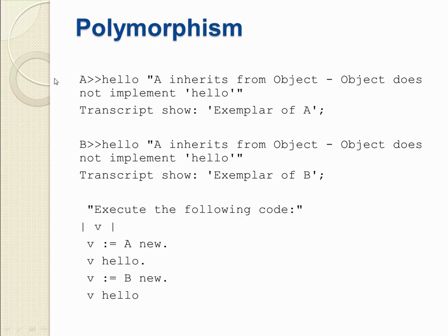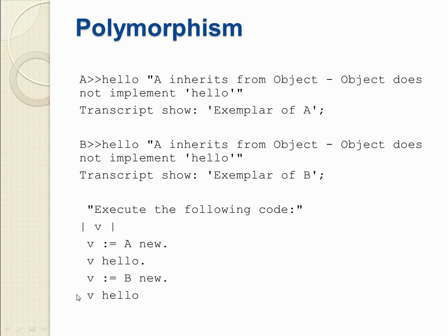A is a subclass of the Object class and B is also a subclass of the Object class. A implements a method called hello and B also implements a method called hello. In A's hello method it outputs a message saying 'example of A', and in B's hello method it displays a message called 'example of B'. We have created an instance of A and also an instance of B. First we call A's hello method and secondly we call B's hello method.